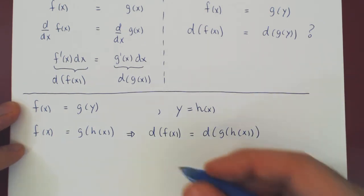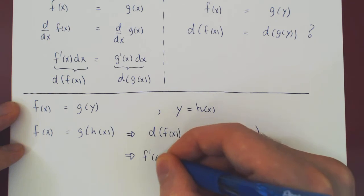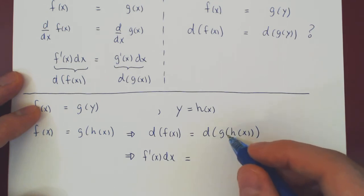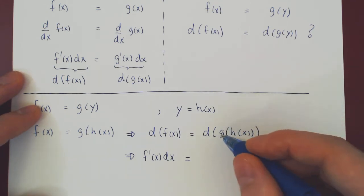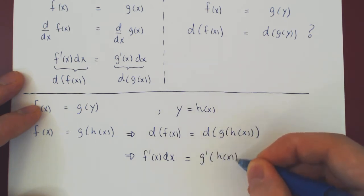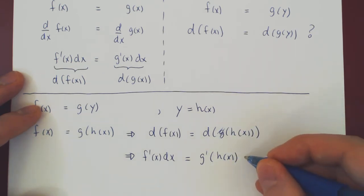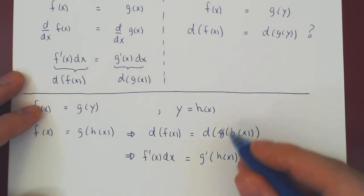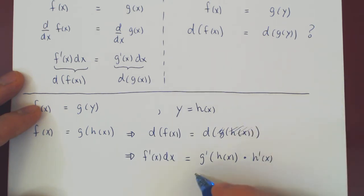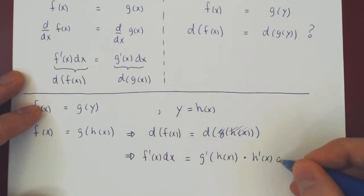Let's compute both differentials. The differential of f of x is clearly f prime of x dx. For the right side, we must differentiate g of h of x — a composition — so we use the chain rule. Differentiating the outer function first gives g prime at h of x, and by the chain rule we multiply by the derivative of h of x, which is h prime of x. We then multiply by dx, the differential of the independent variable.